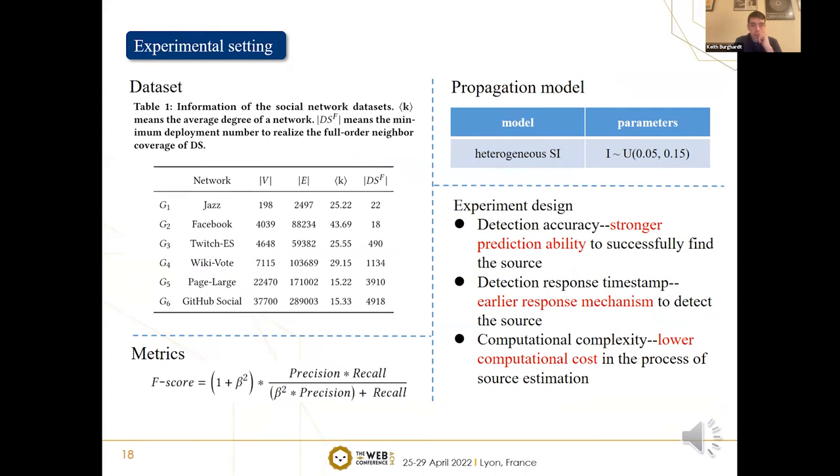This term, precision, is the proportion of the diffusion source in the predicted source from candidates. This means the results of F-score shouldn't be too high if the number of the same peak value is too large. And we use a heterogeneous SI as the propagation model whose infection rate follows a uniform distribution from 0.04 to 0.15. Note that in addition to traditional experiments related to detection accuracy, we also designed some meaningful experiments to highlight that GFNL can infer the source with an early response mechanism and a lower computational cost.